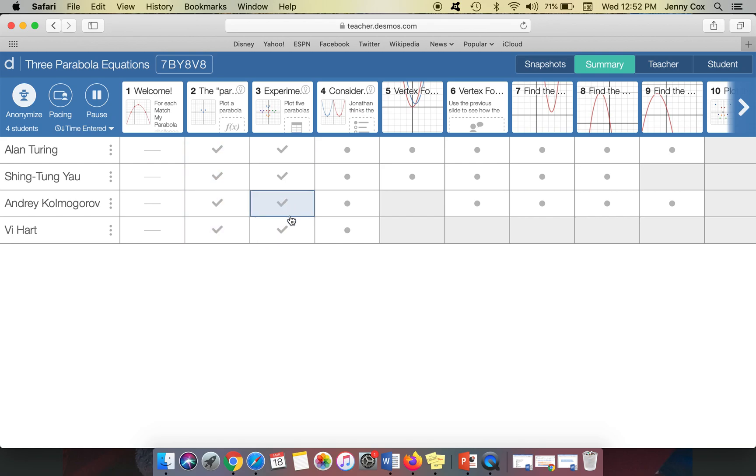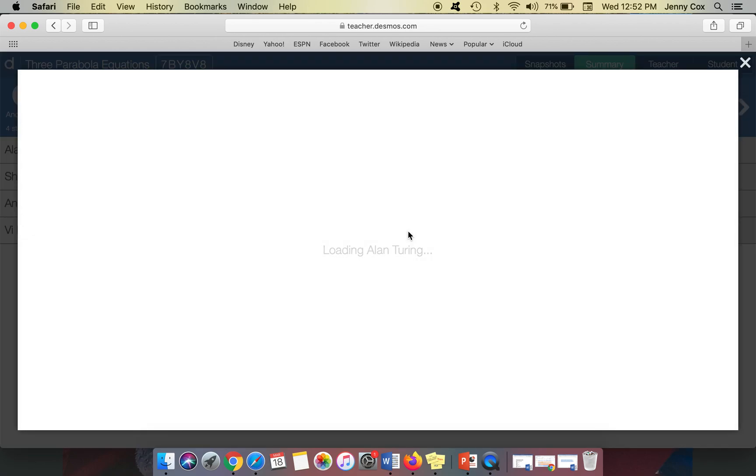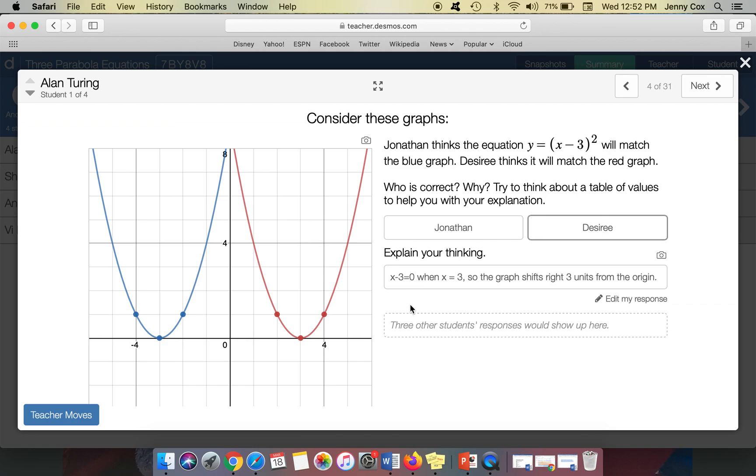So if they have check marks, that means that they got it correct. Maybe they have some descriptions. And so I can see where it says explain my thinking. So it says who's correct and why. And so I have someone that said x minus 3 equals 0. When x equals 3, the graph shifts right three units from the origin.